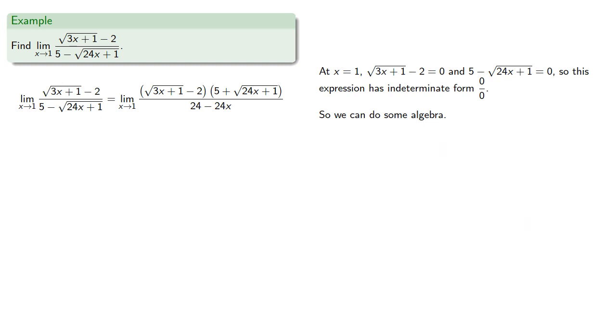One of the reasons we want to leave this in factored form is our numerator still has this expression, square root 3x plus 1 minus 2, so it's still 0 at x equals 1.